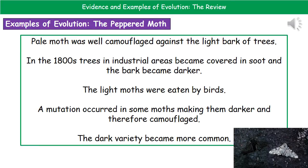If we consider examples where we can see evolution having taken place, the first one is the peppered moth. The pale moth was actually very well camouflaged against the light bark of trees. However, when it came to the 1800s and the industrial revolution kicked in, the trees in industrial areas became very soot-covered and the bark became much darker. As a result, the pale moth stood out while the darker moth blended in perfectly and was well camouflaged. So the light moth became eaten by birds much more, meaning the dark moths survived, reproduced, and the dark variety became more common.